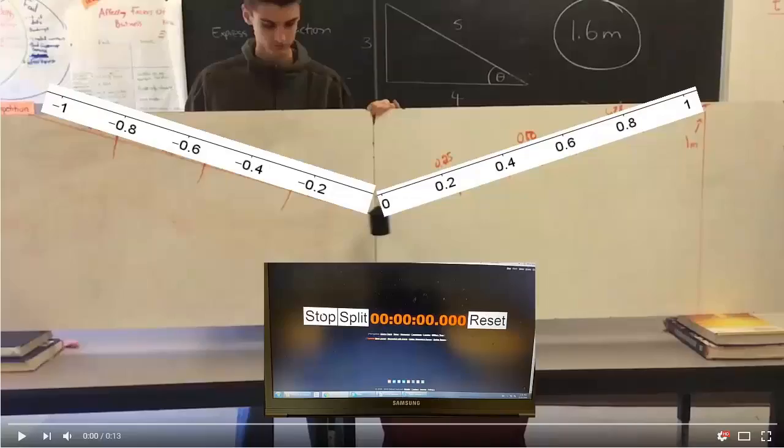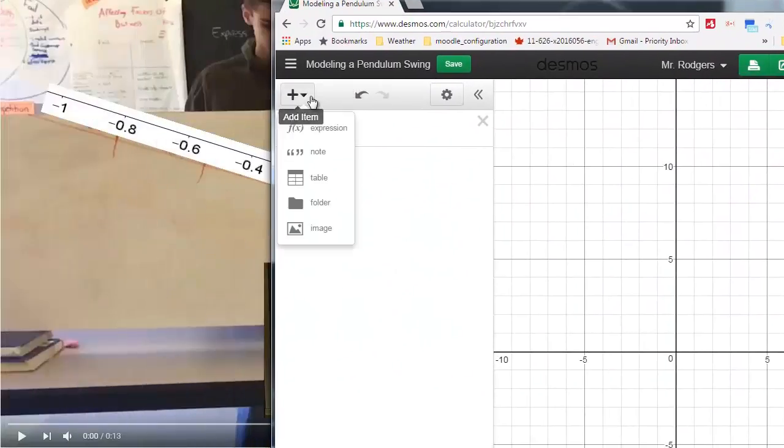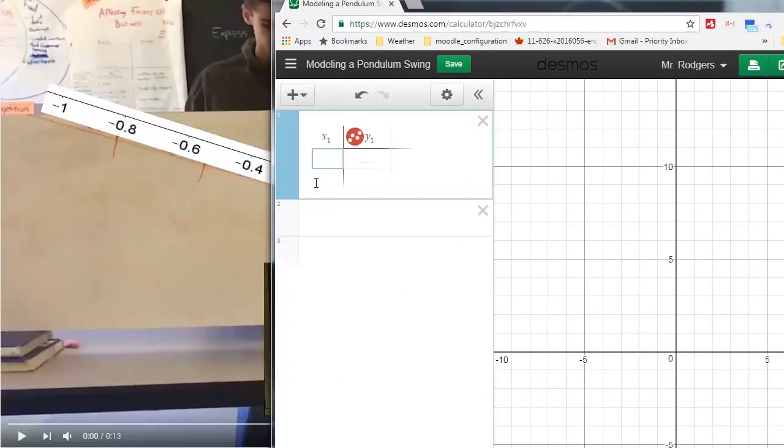What I would like you to do with this video is use it to collect some data, and so basically this zero meters, zero time position, we are going to enter this into Desmos, and so we are going to add a table and at zero seconds it is at zero meters.